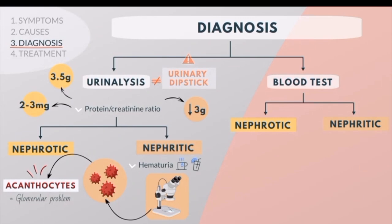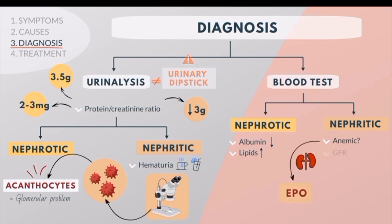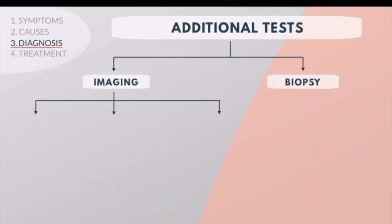Typically, laboratory findings of Nephrotic syndrome include low levels of albumin and high concentrations of lipids, sometimes above normal concentration. In glomerulonephritis, a complete blood count is used to determine if the patient is anemic, which may suggest decreased production by the kidney. It also assists in assessing GFR in order to document the degree of renal dysfunction.